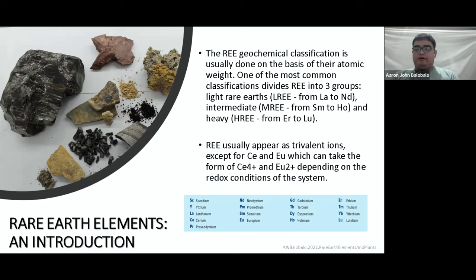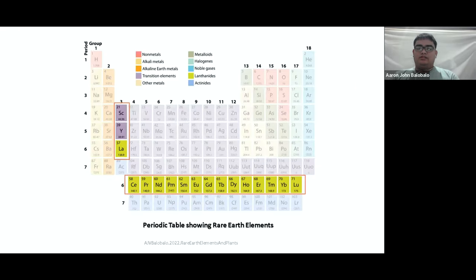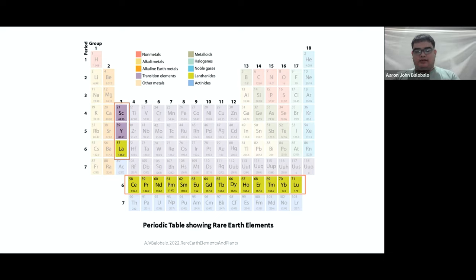REEs usually appear as trivalent ions, except for cerium and europium, which can take the form of CE4+ and EU2+ depending on the redox condition of the system. This periodic table shows where the rare earth elements are located — the lanthanide series from lanthanum to lutetium, plus scandium and yttrium, which are considered transitional elements. But scientists also group them as rare earth elements, so rare earths are composed of the lanthanide series plus SC and Y.